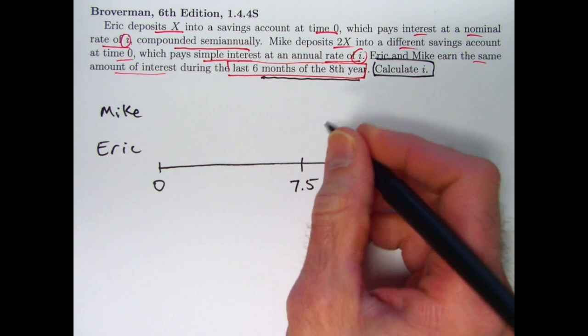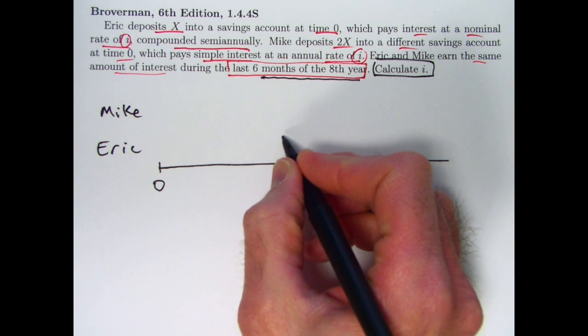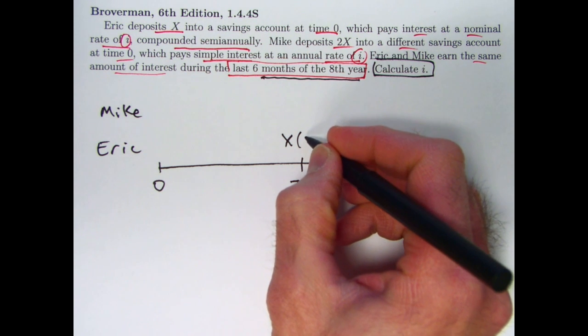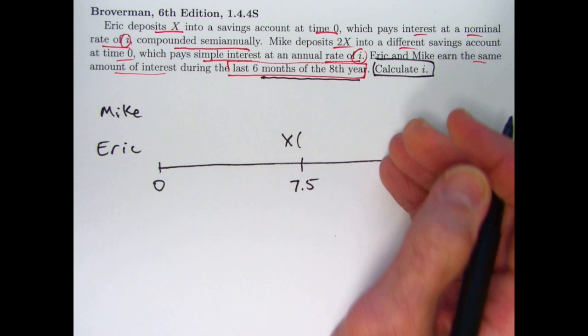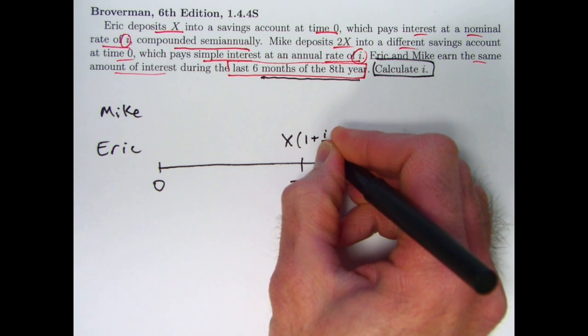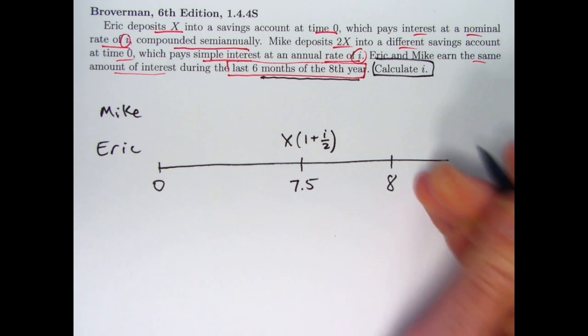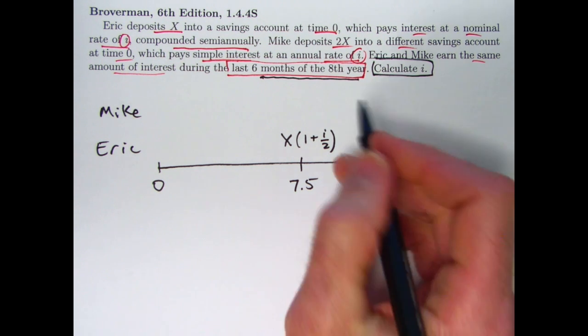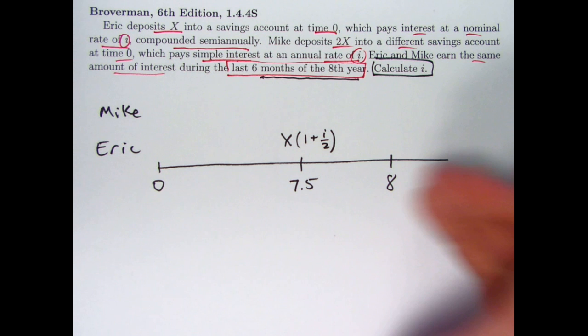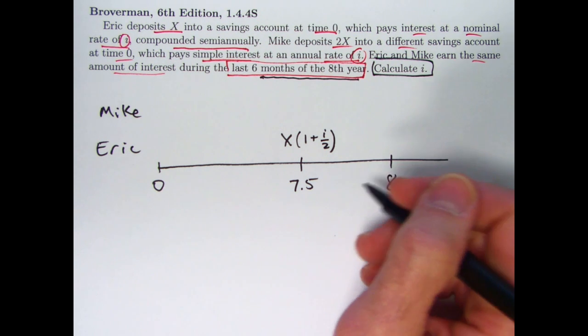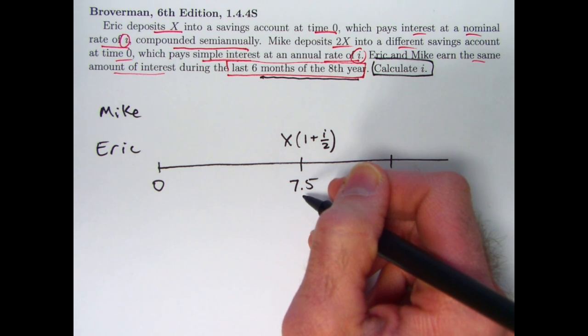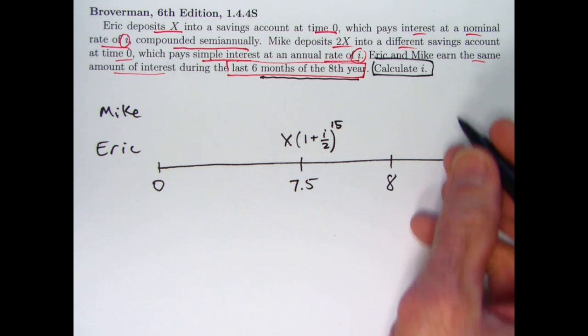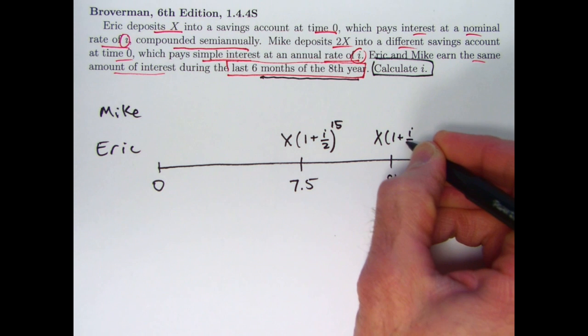How much has Eric's account accumulated at time 7.5? Eric deposits X initially. It's compound interest. i is the nominal rate, but it's compounded semi-annually twice per year. That means i over 2 is the semi-annual interest rate. So every half year, you keep multiplying the previous balance by 1 plus i over 2. When you're at time 7.5, how many half years have gone by? 15 of them. That's going to be the power here. So that's how much Eric's account has accumulated to at time 7.5. At time 8, it's going to be the same thing except to the 16th power.